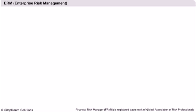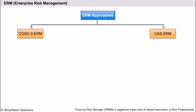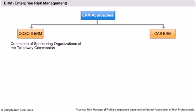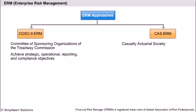Today, there are two widely disseminated ERM approaches: COSO2ERM and CASERM. COSO2ERM is a risk framework from the Committee of Sponsoring Organisations of the Treadway Commission that is geared to achieve strategic, operational, reporting and compliance objectives. The CASERM framework was developed by the Casualty Actuarial Society. The framework focuses on hazard, financial, strategic and operational risks.